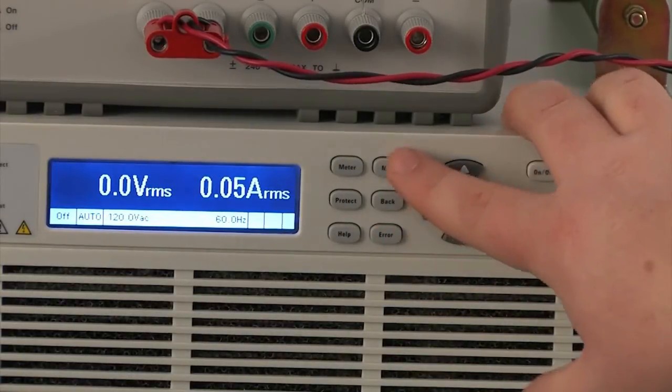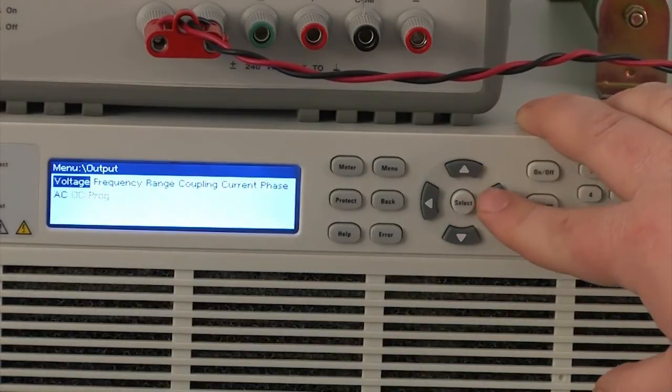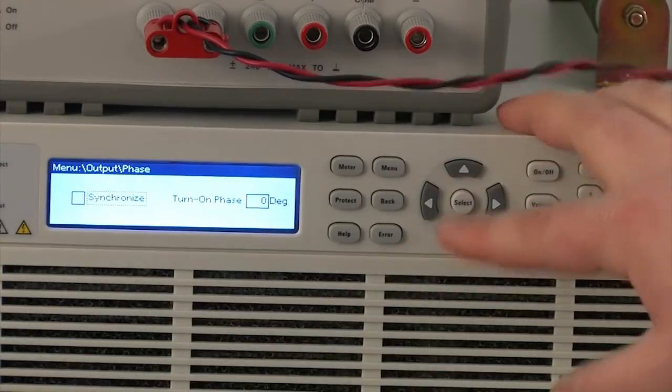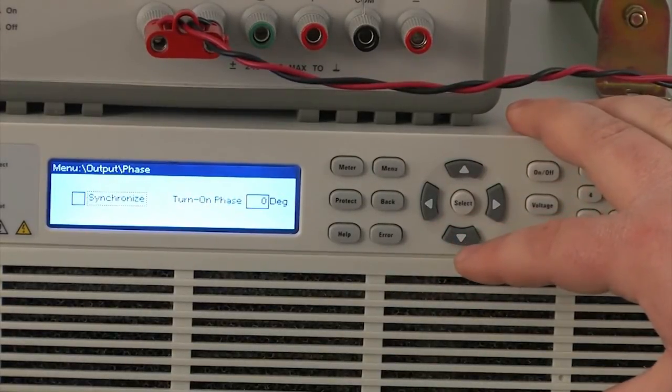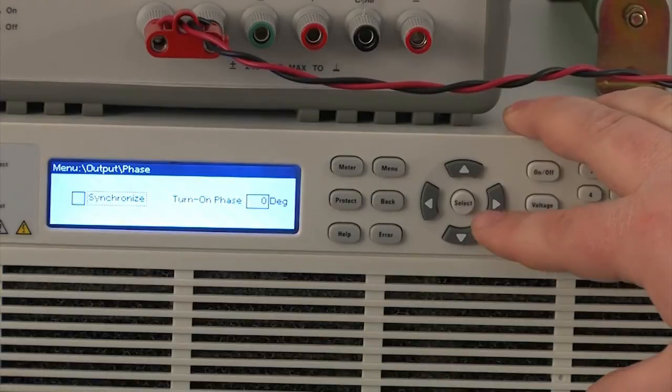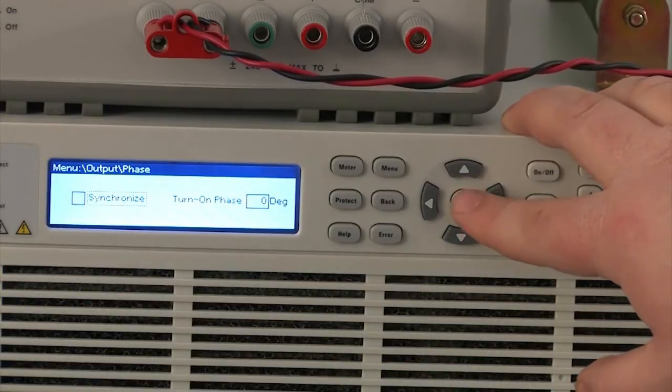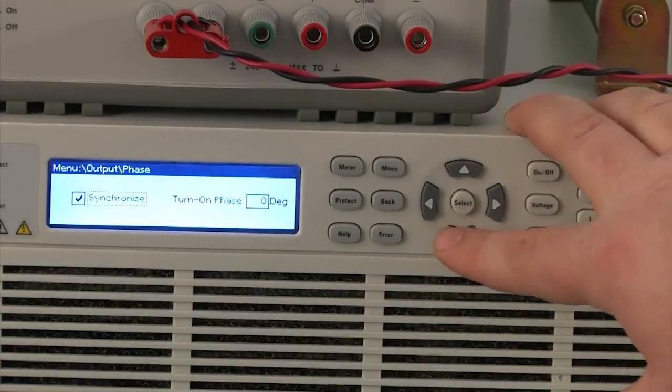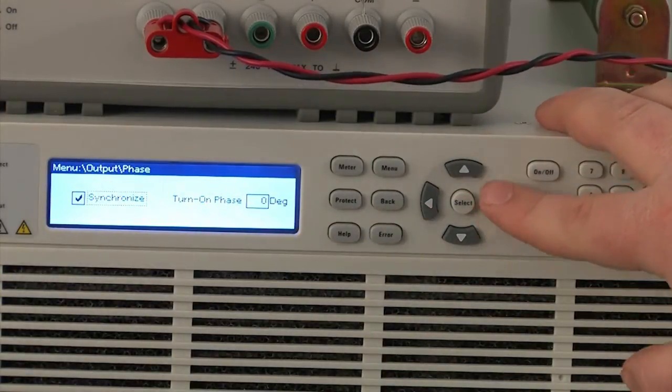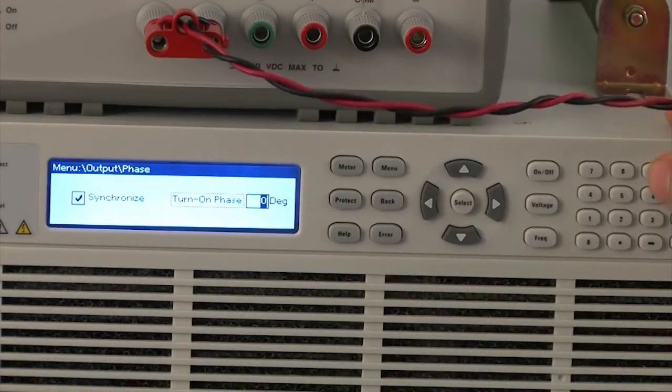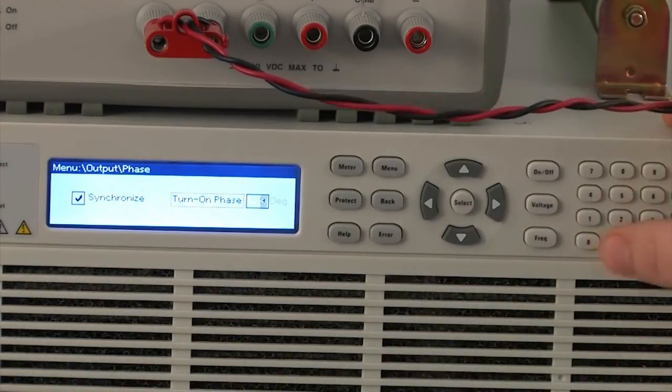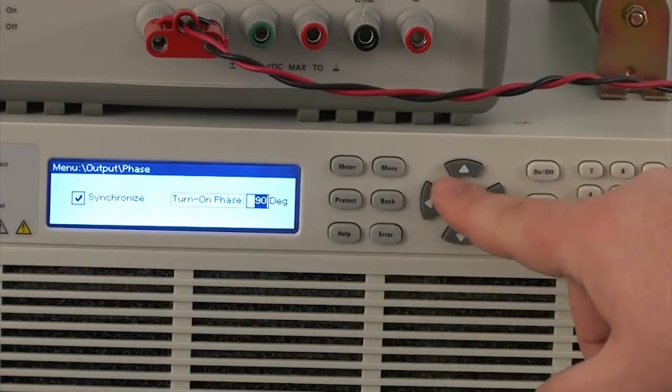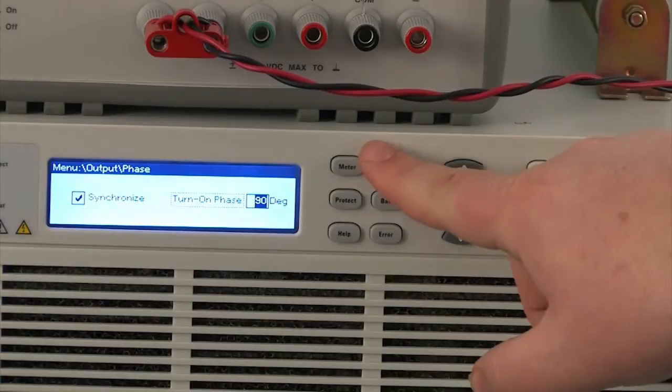And then I'm going to hit the menu button here and go to output. Now with this AC source you can synchronize your output on all transition to a phase. So for inrush current testing you want to start a certain phase so you get the highest inrush current. So what you're going to do here is click on this synchronize and make sure that your synchronized checkbox is selected. And then you're going to choose your turn on phase. So we're going to do it at 90 degrees for this test here. And then hit select and that's all selected. So we're going to go back to the meter.